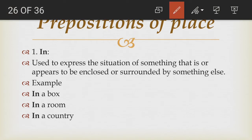The first preposition is 'in.' We use 'in' to express the situation of something that is or appears to be enclosed or surrounded by something else. If something is enclosed or surrounded by something, we use the preposition 'in.' For example, 'in a box' means something is enclosed — the ball is in the box, so the ball is enclosed by the box.